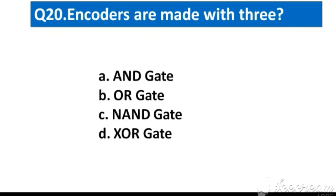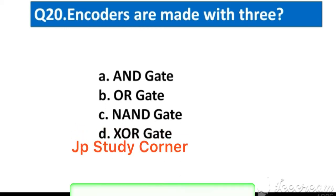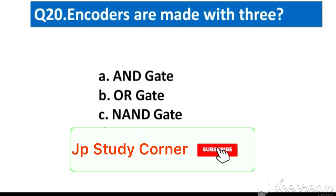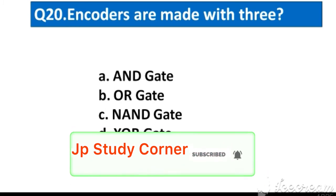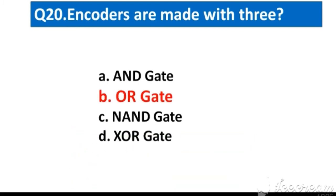Question number 20. Encoders are made with. Option A. AND gate, B. OR gate, C. NAND gate, D. XOR gate. The right answer option B. OR gate.